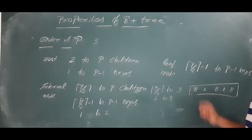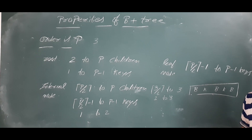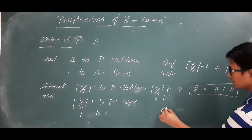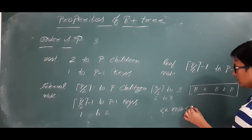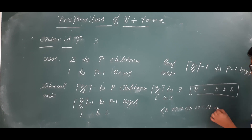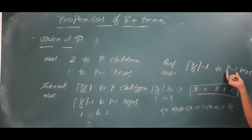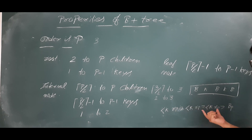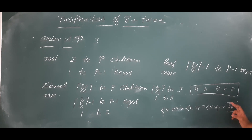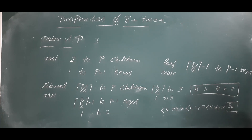The leaf node will consist of minimum ⌈p/2⌉ minus one keys and maximum p minus one keys. The leaf node structure is: key, record pointer pair, key, record pointer pair, and at the end a block pointer which connects to the sibling node. The reason we subtract one from p for the maximum is that one slot is used by this block pointer. So with p equals three, minimum is one key and maximum is two keys.